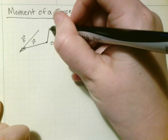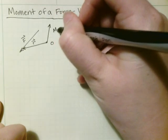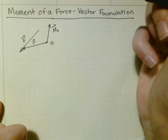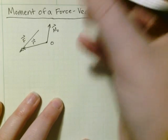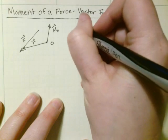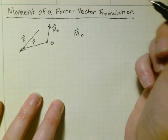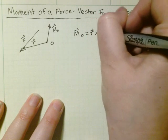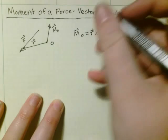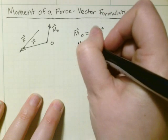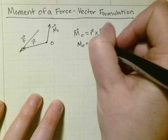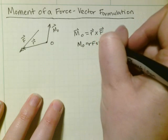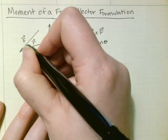And then you would get your moment perpendicular to the plane of R and F. This is where you use your cross product. The moment is R cross F, and the magnitude of that moment is R F sine theta, where this is theta.